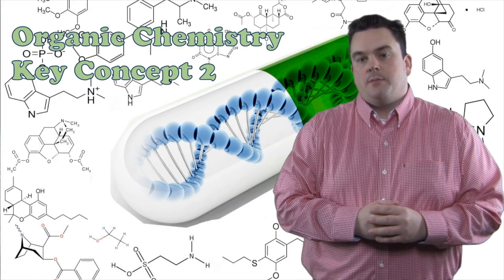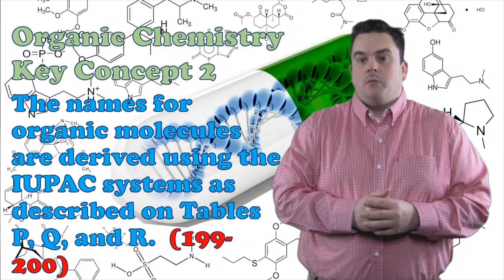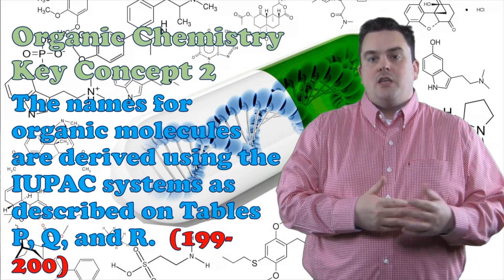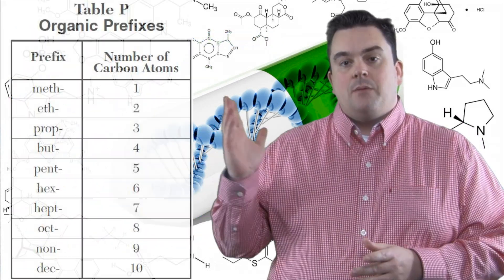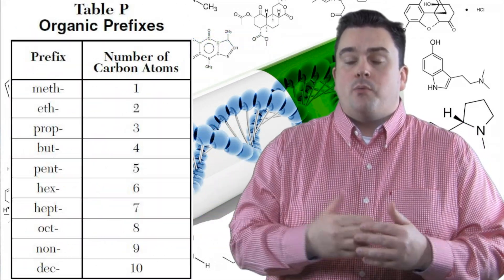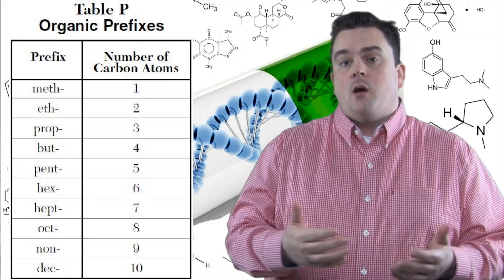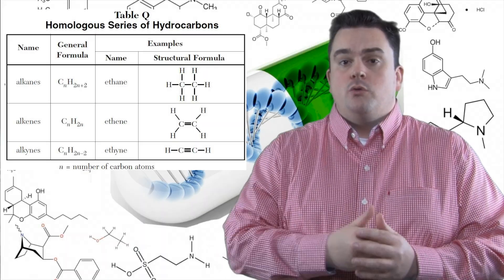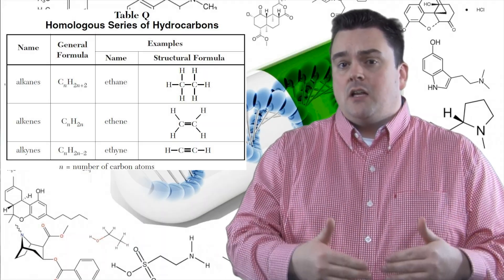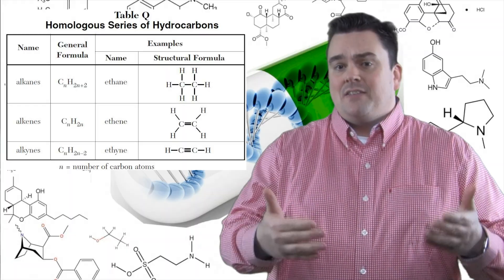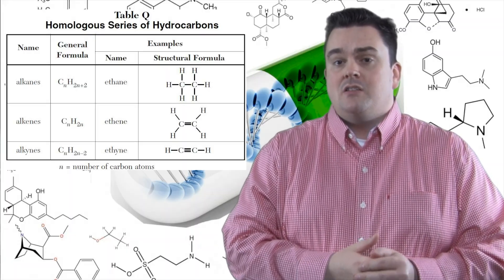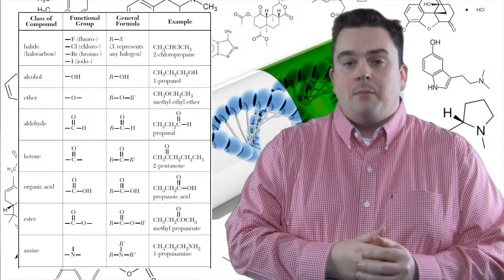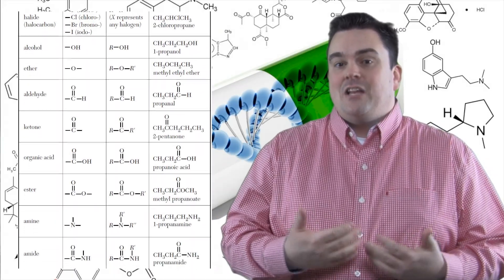Organic chemistry key concept two. The names for organic molecules are derived using the IUPAC system as described on tables P, Q, and R. Table P is used to determine the prefix for how many carbons you have in your long carbon chain. Table Q is used to determine whether you have an alkane, alkene, or alkyne based on the single, double, or triple bonds present between those carbon atoms. Table R is used for naming organic compounds that contain functional groups.